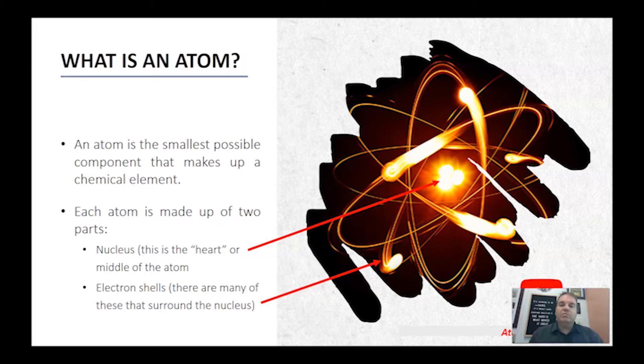So the first thing you need to understand is what an atom is. An atom is the smallest possible component that makes up a chemical element. It's made up of two main parts: the nucleus, which is the heart of the atom that contains the protons and neutrons, and then we've got what we call electron shells which circle around the outside.